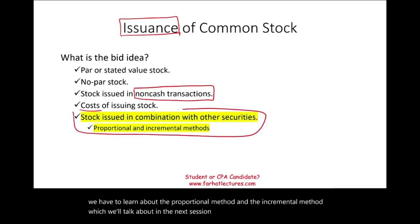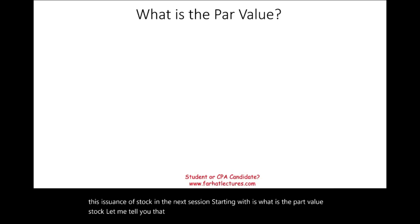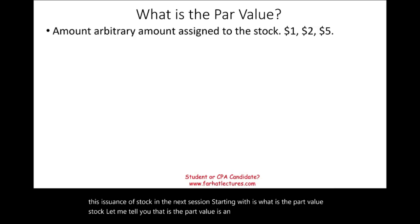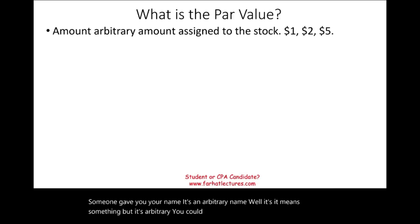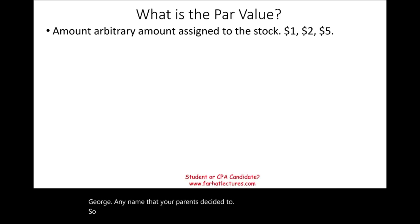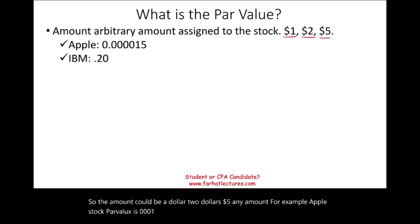Starting with par value stock — what is it? The par value is an amount arbitrarily assigned to the stock. It's like your name: someone gave you your name, it's arbitrary. The amount could be $1, $2, $5, any amount. For example, Apple's stock par value is $0.00015, IBM's is $0.20, and Google's is $0.001.